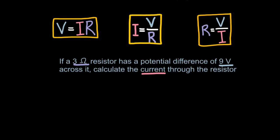So to calculate current, you do voltage divided by resistance. Here's a question: If a 3 ohm resistor has a potential difference of 9 volts across it, calculate the current through the resistor. So we know our voltage is 9 volts, we know our resistance is 3 ohms, so we simply do 9 divided by 3 gives you 3 amps. Very easy.